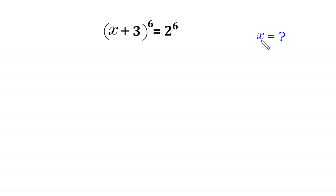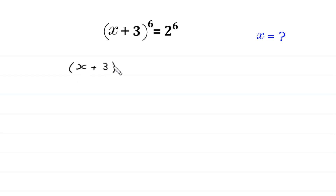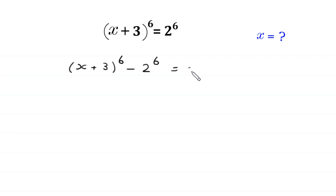So, let us start by moving this 2 to the power 6 to the left side. (x + 3) whole to the power 6 minus 2 to the power 6, at the left side, is equal to 0.